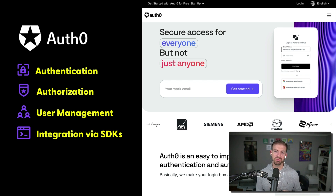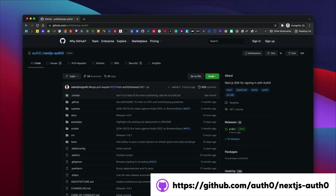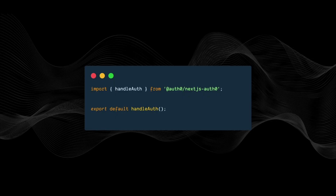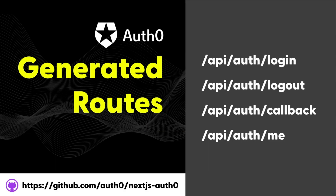We used Auth0 for two things: authentication — handling the login process and identifying who the user is — and authorization — determining what that user has access to. Auth0 also handles user management so we don't have to, and it has great integration with SDKs like the Next.js SDK. After configuring a couple of environment variables, you export the handleAuth function, which creates a dynamic route that generates associated routes for login, logout, callback, and me.